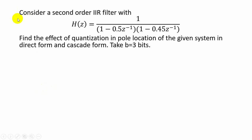Here we see an example which shows the effects of coefficient quantization error. We are going to consider a second order IIR filter with the system function H(z) equal to 1 divided by (1 minus 0.5 z-inverse) multiplied by (1 minus 0.45 z-inverse). We have to find the effects of quantization on the pole location using direct form realization and cascade form realization. Here we are going to consider the number of bits equal to 3 bits.